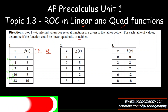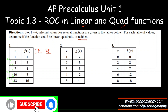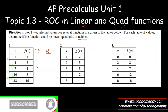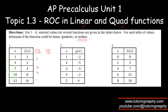If the second difference is also not the same, it will be neither. So let's apply this: 2 minus 1 is 1, 4 minus 2 is 2, 8 minus 4 is 4, 16 minus 8 is 8 — the first differences are not equal. For the second difference: 2 minus 1 is 1, 4 minus 2 is 2, 8 minus 4 is 4 — definitely not equal. So this is neither linear nor quadratic.